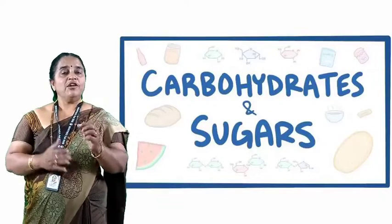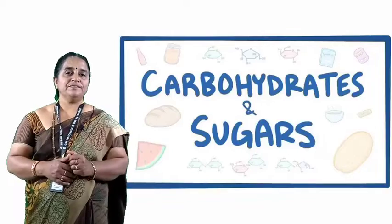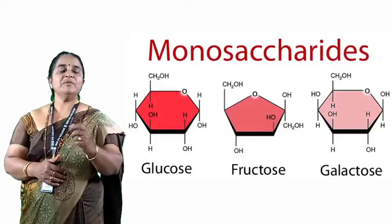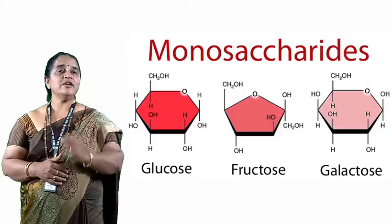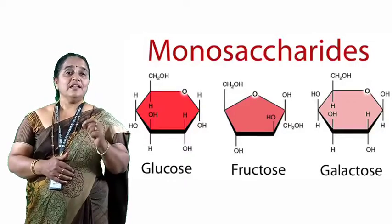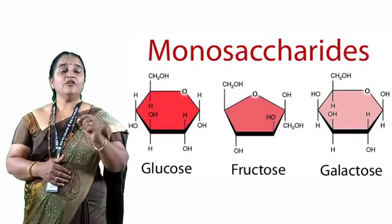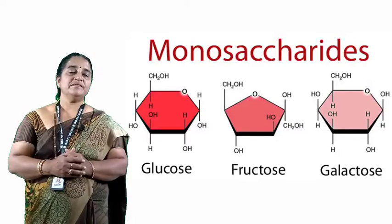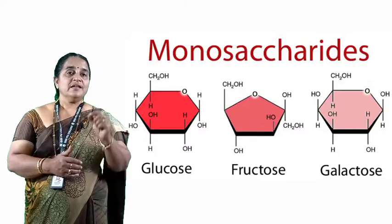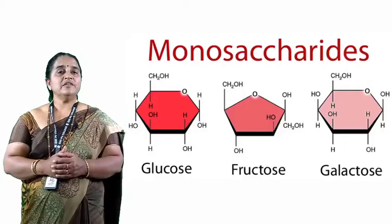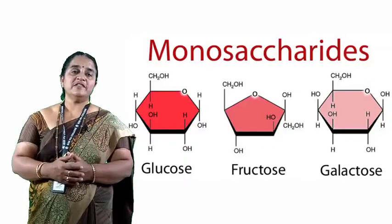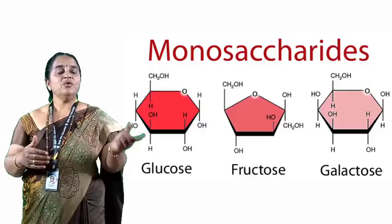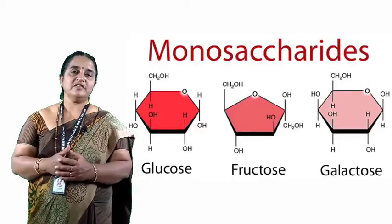Sugars fall into different groups, like monosaccharides. We call them simple sugars. These are highly reducing sugars. They are highly soluble and can easily diffuse across the membrane. These simple sugars are easily available to the cell for generating energy by undergoing an oxidation process.